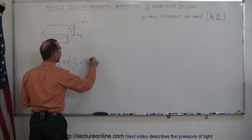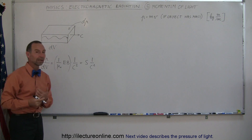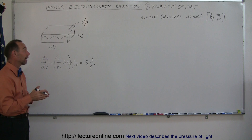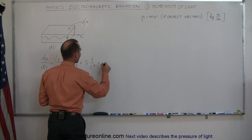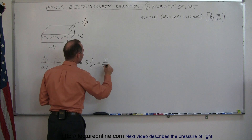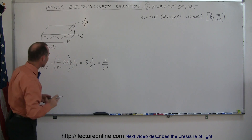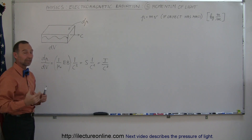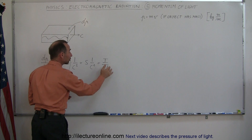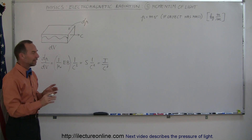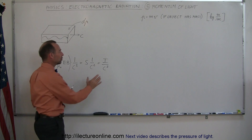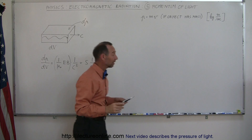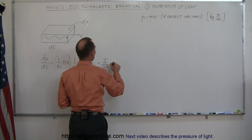We can say this is equal to the magnitude of the Poynting vector times one over c squared. We also learned that the magnitude of the Poynting vector by definition equals the intensity of the light, or the intensity of the electromagnetic radiation. So this can be written as I over c squared. The claim is that the amount of momentum per unit volume in space containing electromagnetic radiation equals the intensity of that radiation divided by c squared. Let's verify this by checking that the units match.